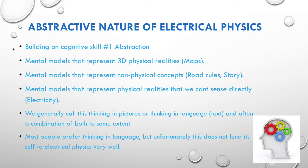Mental models that represent 3D physical realities — things like a map, whether it's a street map or a topographic map — are models that represent a 3D physical reality. We also have mental models that represent non-physical concepts like road rules or a story. And we have mental models that represent physical realities that we can't sense directly — and that's electricity.